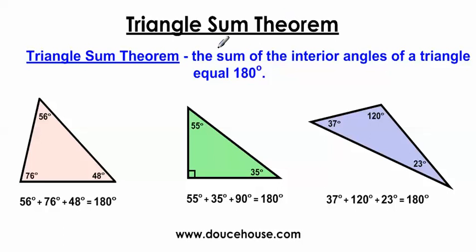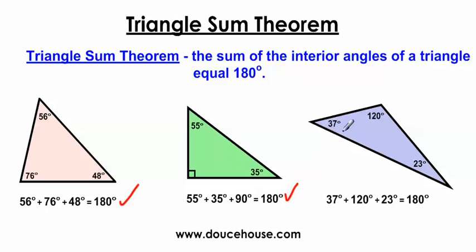The Triangle Sum Theorem states the sum of the interior angles of a triangle equals 180 degrees. The idea is that if you add up all the interior angles of a triangle, they should always equal 180 degrees, no matter how big or small the triangle is, no matter if it's acute or obtuse. All the angles need to equal 180 degrees.